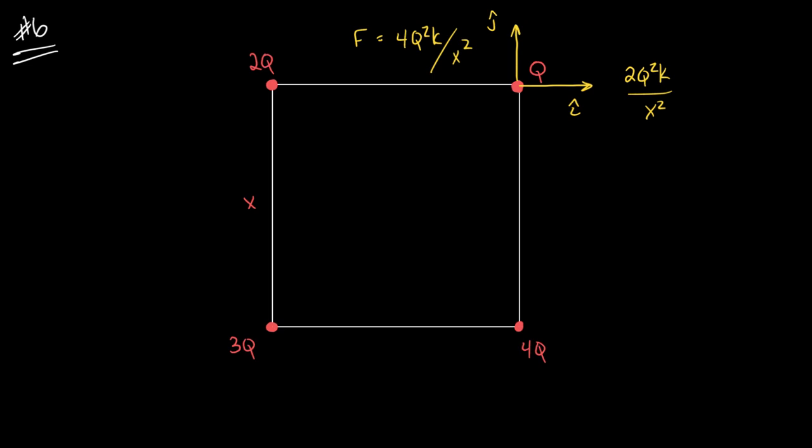We're going to have a force in this direction. Luckily, I know it's at a 45 degree angle to I hat and J hat. So there will be equal contributions to both the I hat direction and the J hat direction from this particular force. But let's first deal with the size of that force. It's got to be 3Q squared K over X squared.